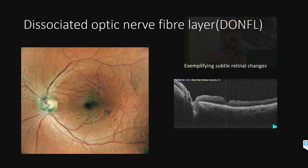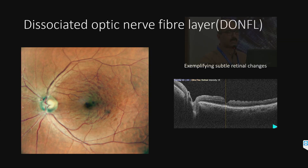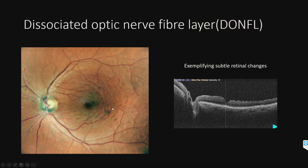This is an unhappy patient who came after macular hole surgery done elsewhere. Vision was 6/9 but he's unhappy. Subtle changes in the retina are picked up better with multicolor imaging — you can see the weft-shaped retinal nerve fiber layer dissociated area, called a DONFL.